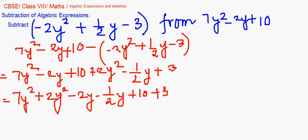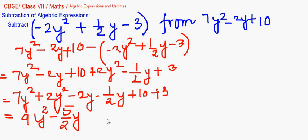As in the previous question, we collect the like terms together. That gives us 7y² plus 2y², then minus 2y and minus half y, then plus 10 and plus 3. Collecting like terms: 7 plus 2 gives 9y². For minus 2y and minus half y, putting over a common denominator of 2 gives minus 5/2 y. And 10 plus 3 is 13. The method for addition and subtraction is essentially the same; only the writing of the expressions differs.